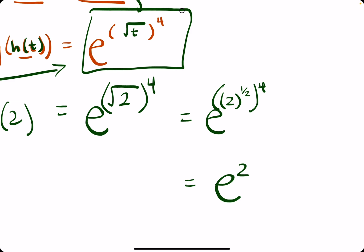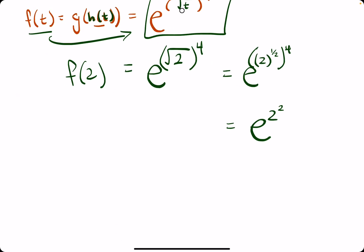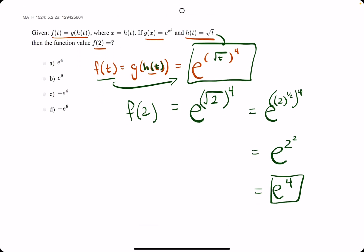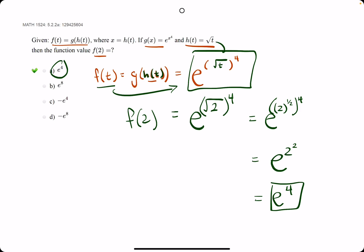So we have e to the 2 raised to the one-half times 4, which is 2. So we have e to the 2 squared, or e to the fourth. So we do see an answer. We break out the eraser, and we see that a is our correct answer.